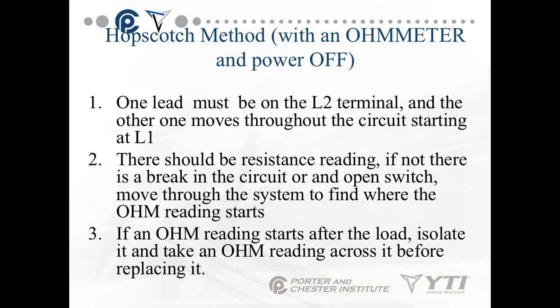With the hopscotch method using an ohmmeter, one lead must be on the L2 terminal, but you have to make sure all power is off. The other lead moves through the circuit starting at L1. There should be resistance readings all the way through — if not, there's a break in the circuit or an open switch. If you get a true reading of 0 ohms anywhere in the circuit, you know you have a short circuit that's probably causing problems like blowing breakers.